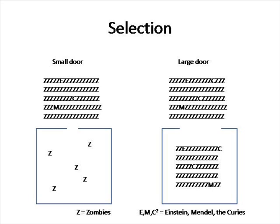If, on the other hand, we have a large door on our selection room, meaning we use a lot of target molecule, we will allow access to a large number of individuals. The room will be full of both zombies and our scientists.